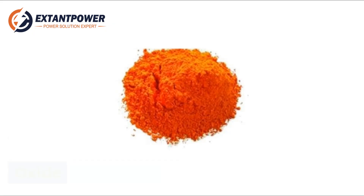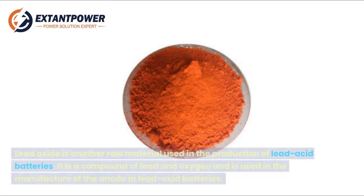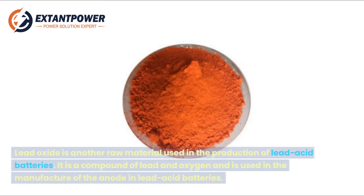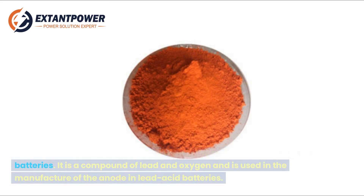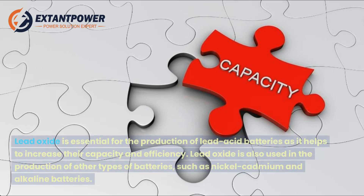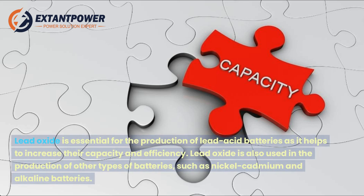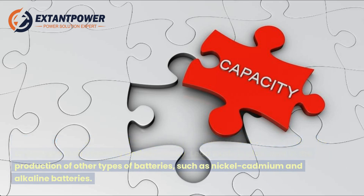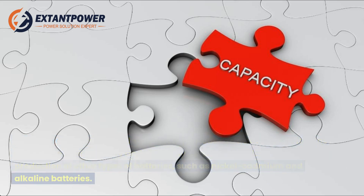Lead oxide is another raw material used in the production of lead-acid batteries. It is a compound of lead and oxygen and is used in the manufacture of the anode in lead-acid batteries. Lead oxide is essential as it helps to increase their capacity and efficiency, and is also used in the production of nickel-cadmium and alkaline batteries.